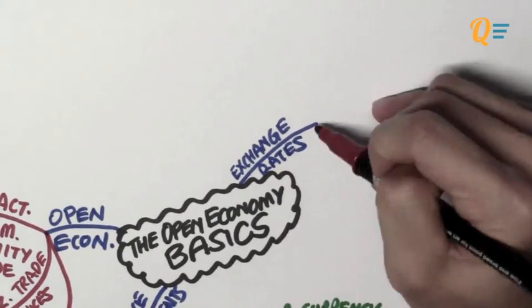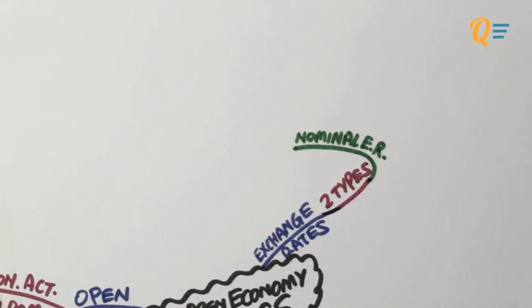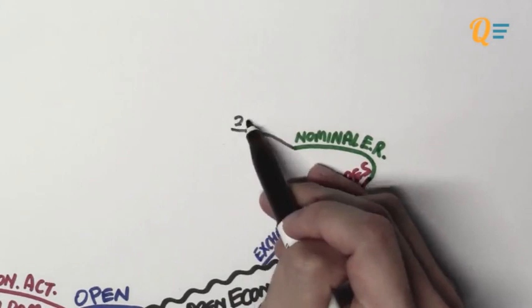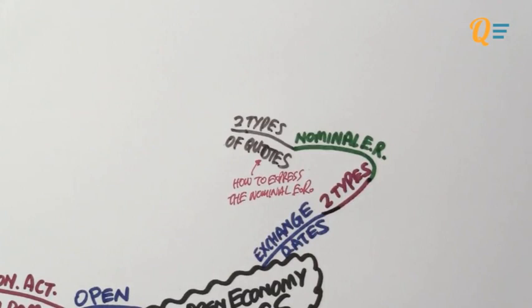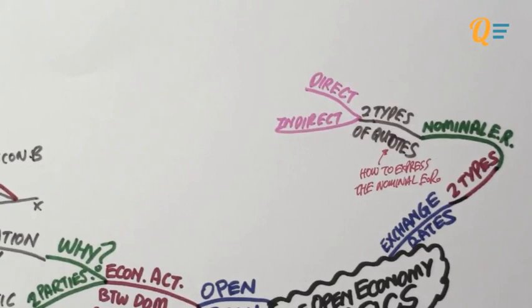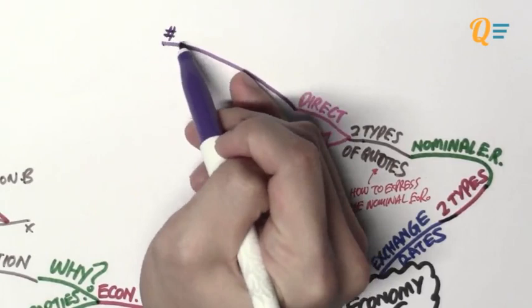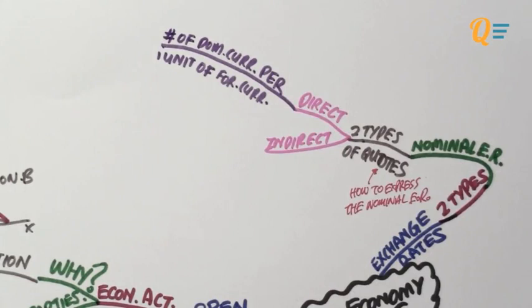There are two types of exchange rates to take note of. The first type is known as your nominal exchange rate. Talking about the nominal exchange rate, there are actually two types of quotes. The term quote here refers to how we express the nominal exchange rate. The two types are the direct quote and the indirect quote. We're only going to be using one of these for introduction to economics, but it's good to know both. The direct quote refers to the number of domestic currency per one unit of foreign currency — how much domestic currency do you need to exchange for one piece of foreign currency?